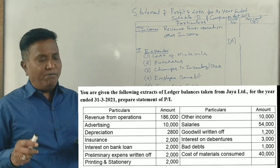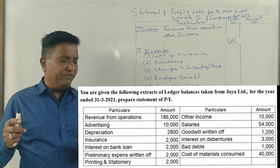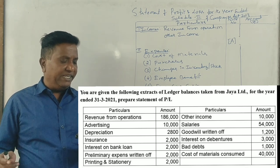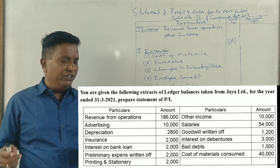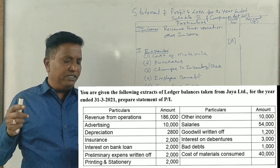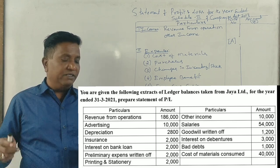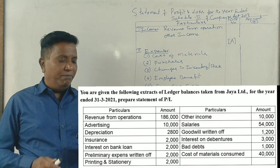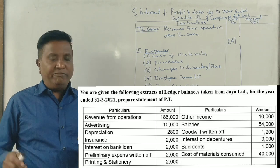The items given are: revenue from operations, other income, advertising, salaries, depreciation, goodwill written off, insurance, interest on debentures, interest on bank loan, preliminary expenses written off, bad debts, printing and stationery, and cost of materials.